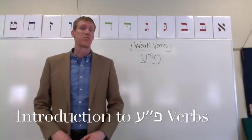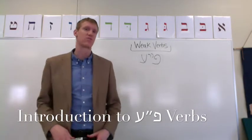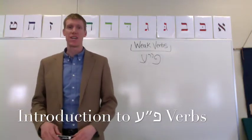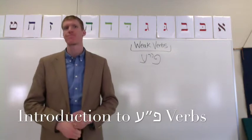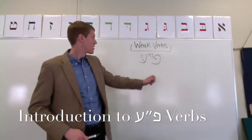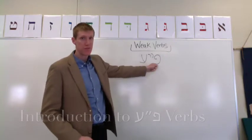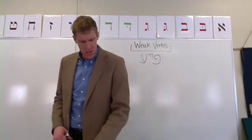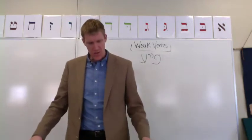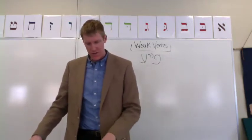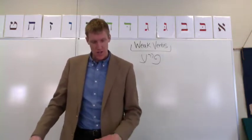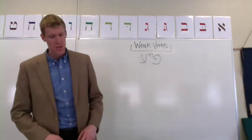We're still talking about weak verbs. In this video, we're discussing verbs that begin with the guttural Ayin — Pe-Ayin verbs — where Ayin is the first root letter. We are on pages 153 through 155 in the textbook, chapter 16.